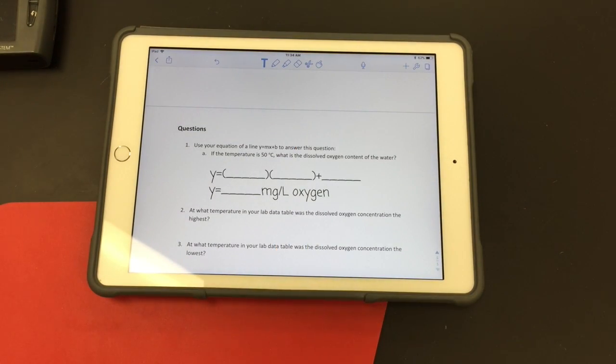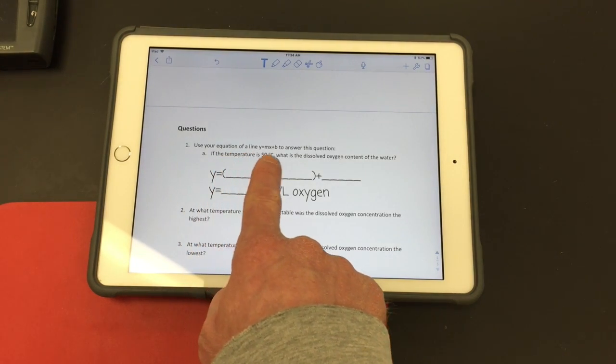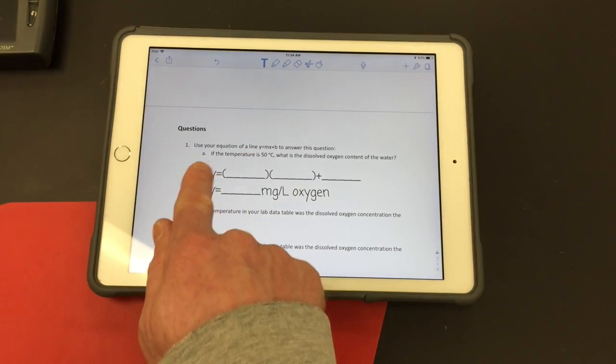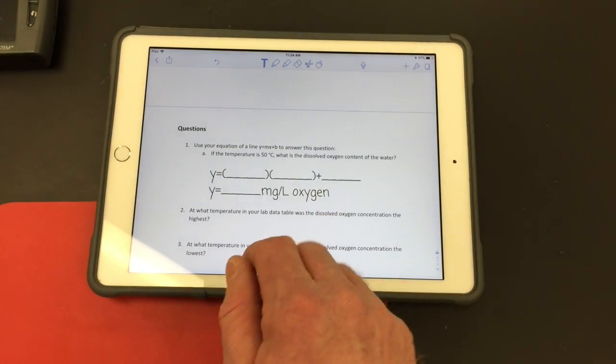And now I need to solve, first question asks for me to solve the equation of a line y equals mx plus b to answer a question. The question says, if the temperature is 50 degrees, what is the dissolved oxygen content of the water?